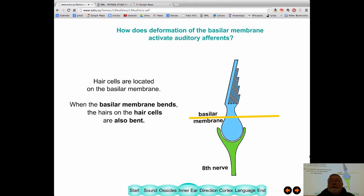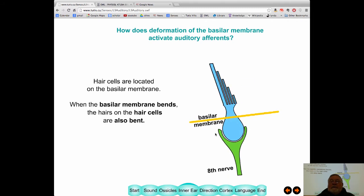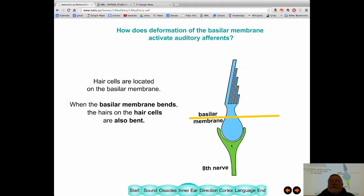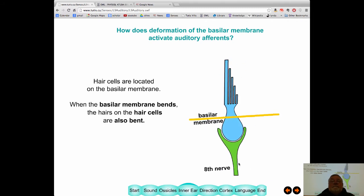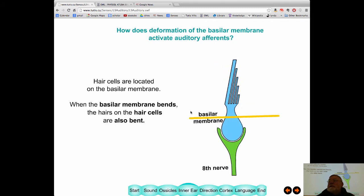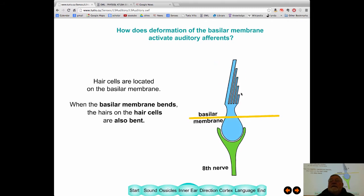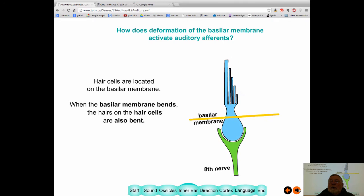Now on this basilar membrane, we've got hair cells. And these hair cells, they're neurons, and they're connected to your eighth nerve, which sends a signal down to a brain stem. And they bend whenever the basilar membrane bends. So when the sound deflects the basilar membrane, you get this bending of the hair cells. Well, what does bending the hair cells do?